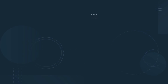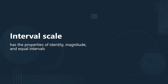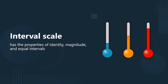The third level of measurement is the interval scale. The interval scale of measurement has the properties of identity, magnitude, and equal intervals. By using this scale, one can know which of the two values is greater or smaller, and it also enables us to know by how much the values differ. An example is the variable temperature measured in degrees Celsius. The difference between 5°C and 6°C is the same as the difference between 24°C and 25°C. However, 4°C is not twice as cold as 2°C.